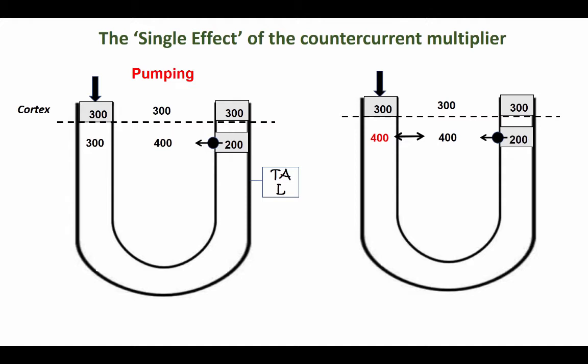In my opinion, the best way to approach this mechanism is to divide it into two stages. The first stage can be referred to as the single effect of the counter current multiplier. Let's look at what happens here on the left hand side.